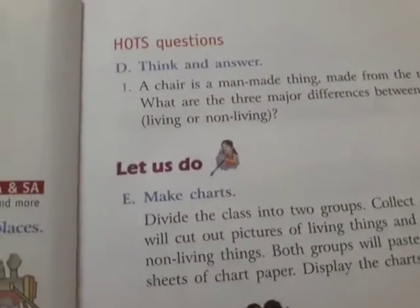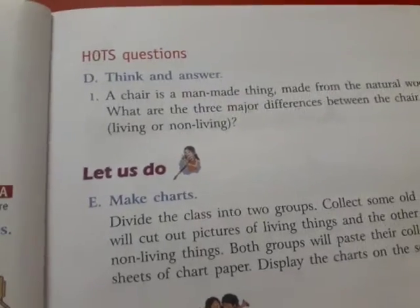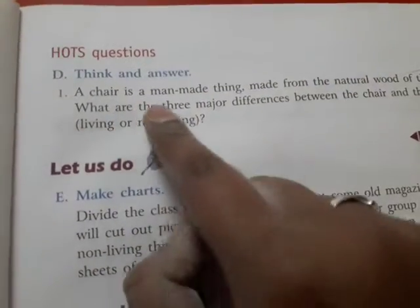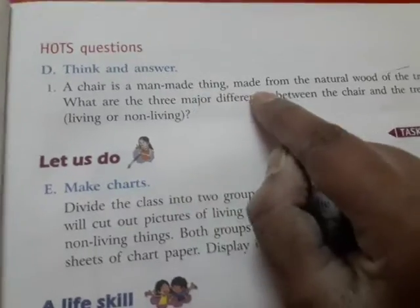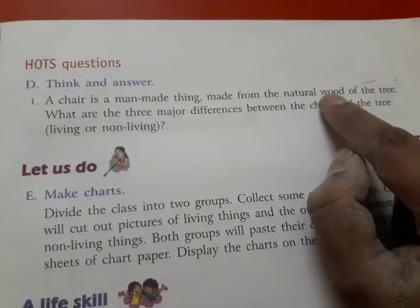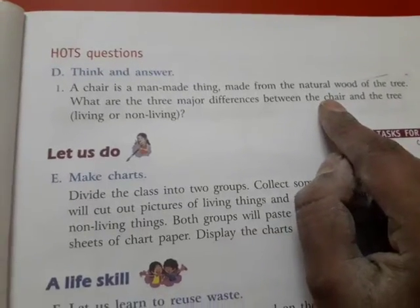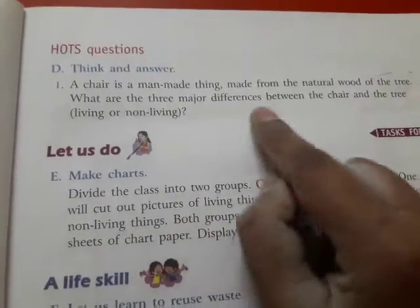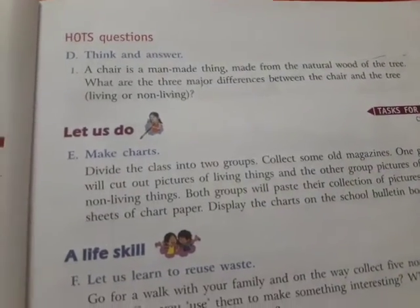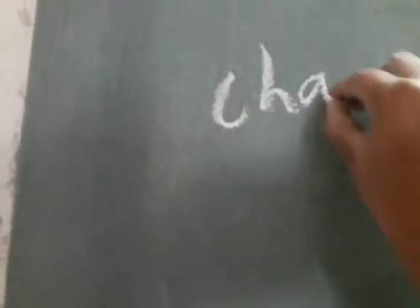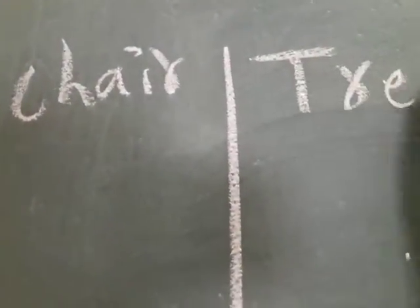Next, see children, page number 39 - hard questions. Think and answer. A chair is a man-made thing. Chair is made from natural wood. Wood is from the tree - wood is nature of the tree. What are the three major differences between the chair and tree?